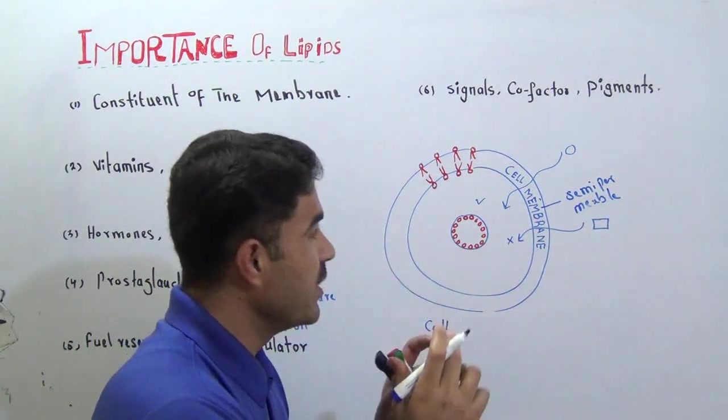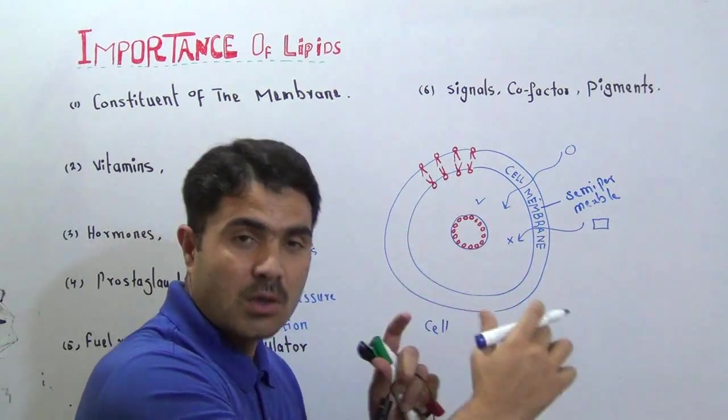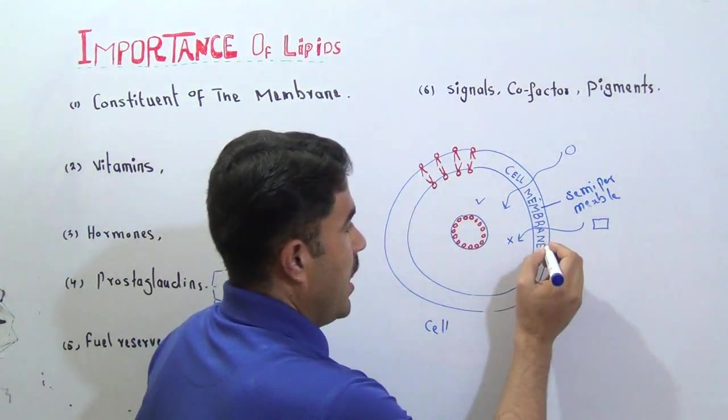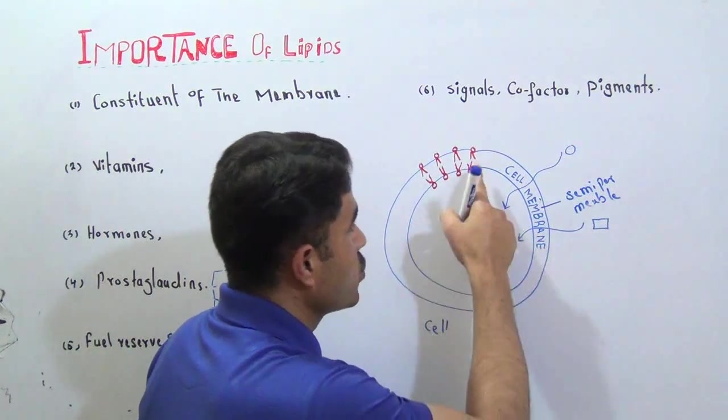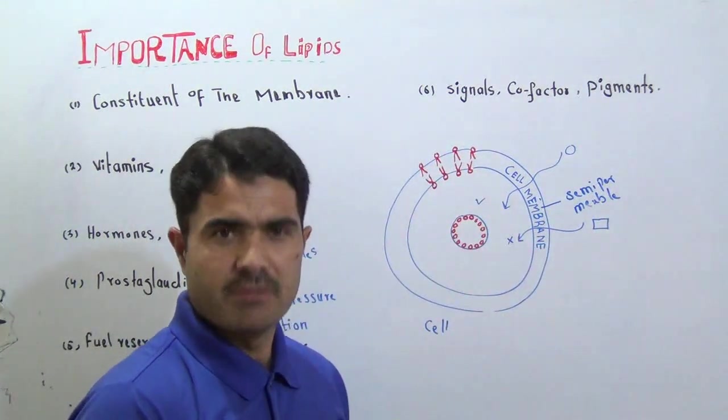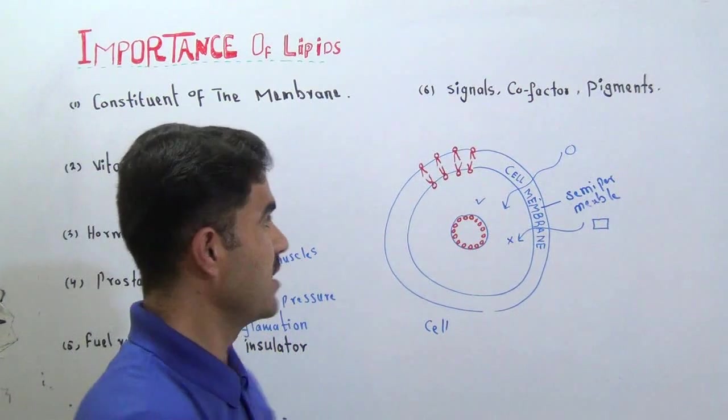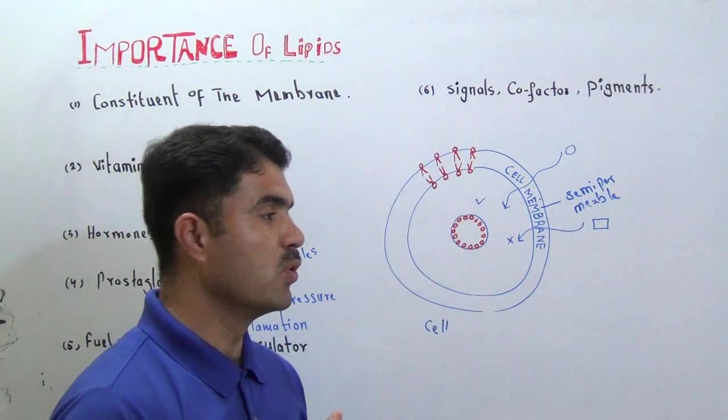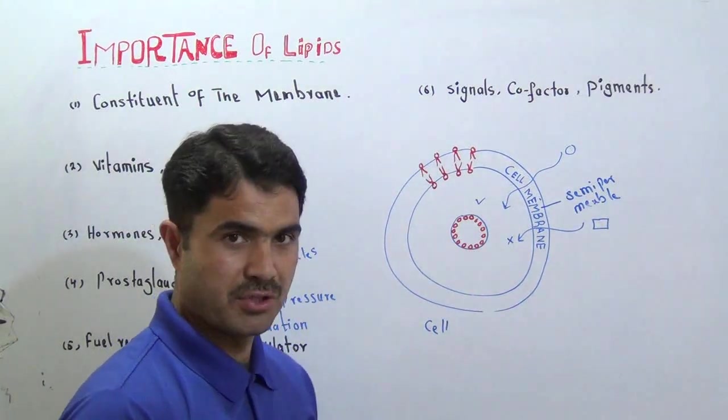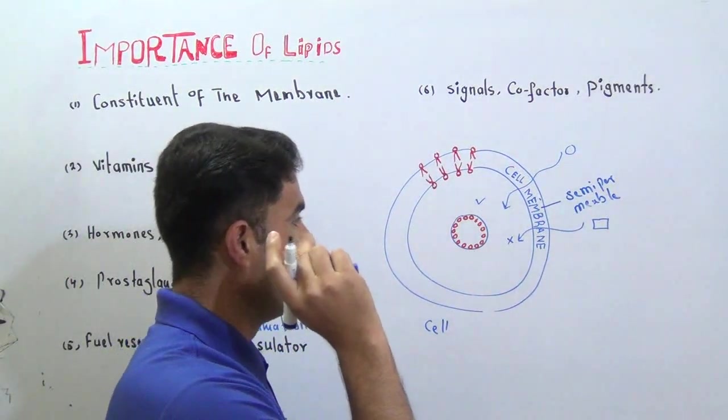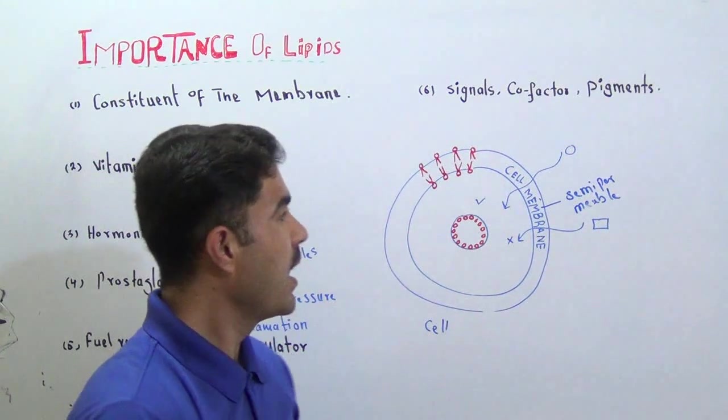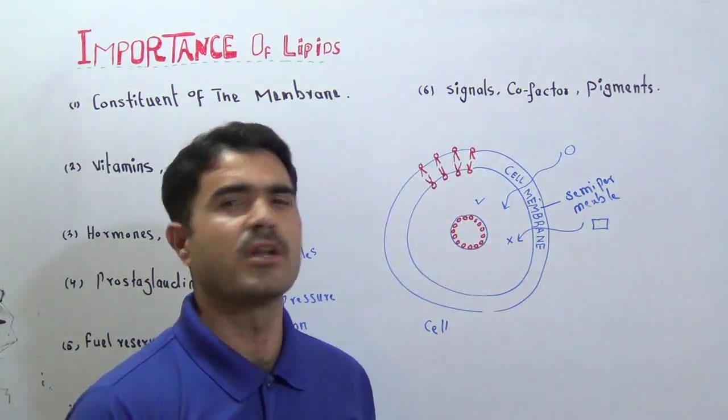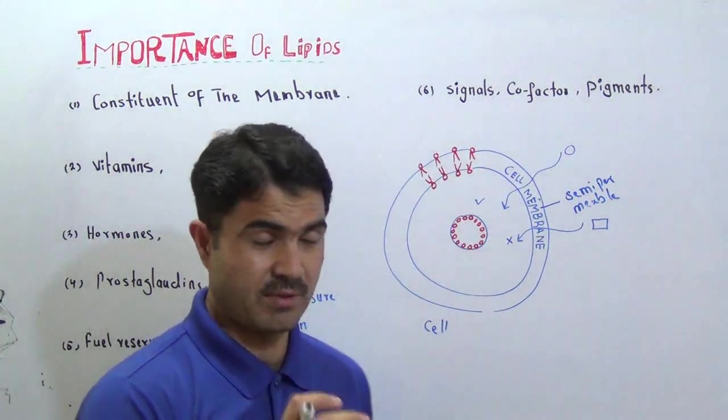The cell membrane must contain some sort of this facility to enter some molecules and to prohibit other molecules. This is done through the lipids. There is lipid in the cell membrane that regulates the entry of substances, and that credit goes to the phospholipids, a kind of lipid. If there is no lipid, there will be no transport, no regulation, no stability of the cell, and the normal functioning of the cell will not be possible.